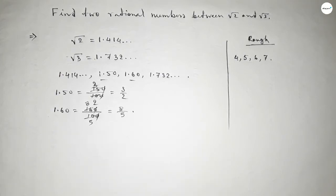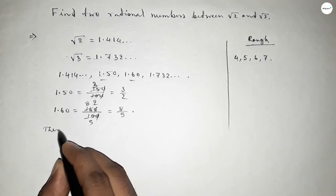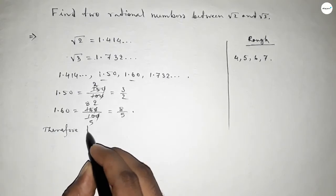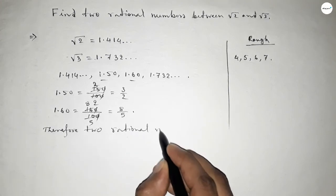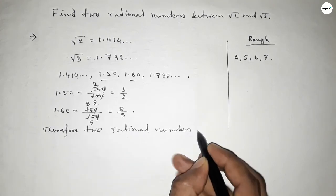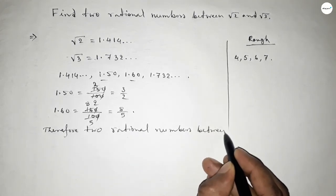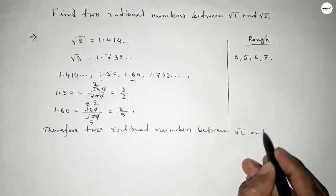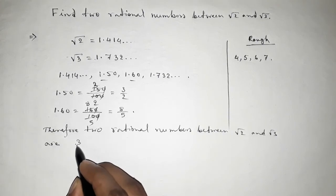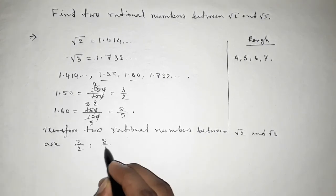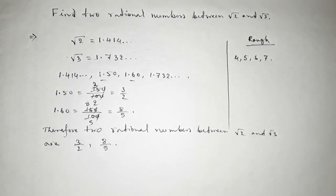Therefore, two rational numbers between root 2 and root 3, your answer will be different if you take another way. So this is the process to find out two rational numbers between root 2 and root 3. That's all, thanks for watching. Please subscribe, like, and comment.